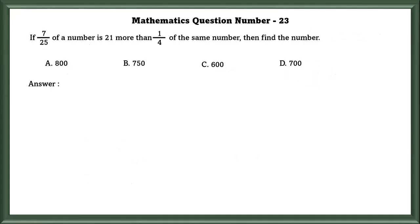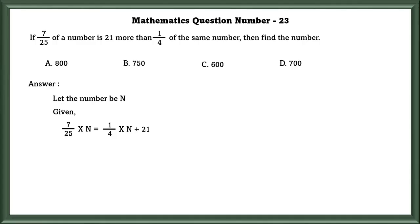Mathematics question number 23. If 7 by 25 of a number is 21 more than 1 by 4 of the same number, then find the number. Let the number be n. Given: 7 by 25 into n is equal to 1 by 4 into n plus 21.